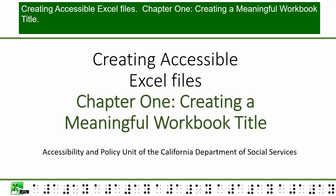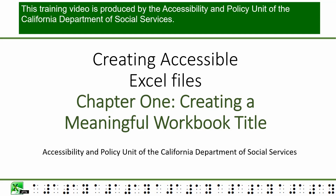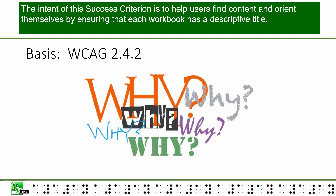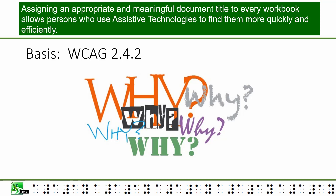Creating Accessible Excel Files, Chapter 1: Creating a Meaningful Workbook Title. This training video is produced by the Accessibility and Policy Unit of the California Department of Social Services. The basis of this criteria is WCAG 2.4.2. The intent of this success criterion is to help users find content and orient themselves by ensuring that each workbook has a descriptive title.